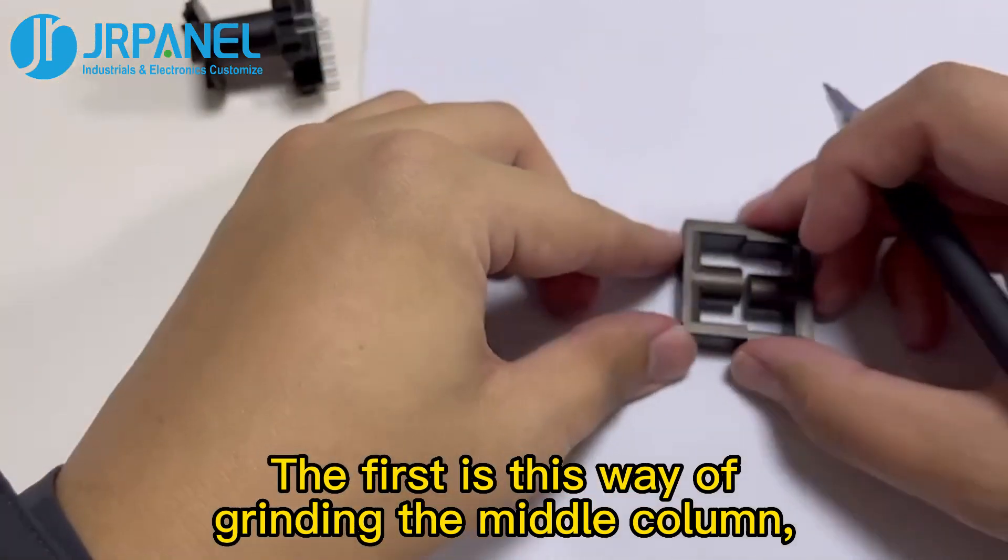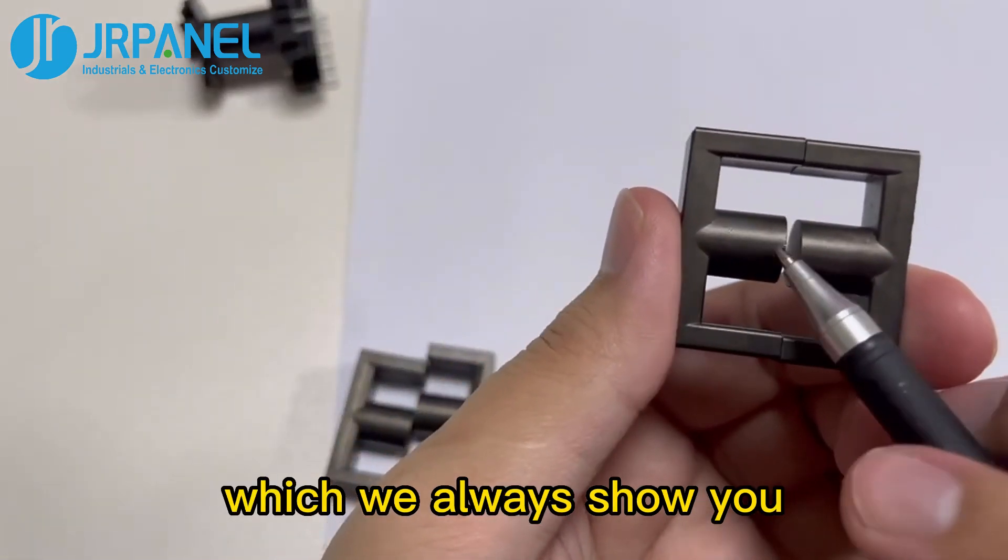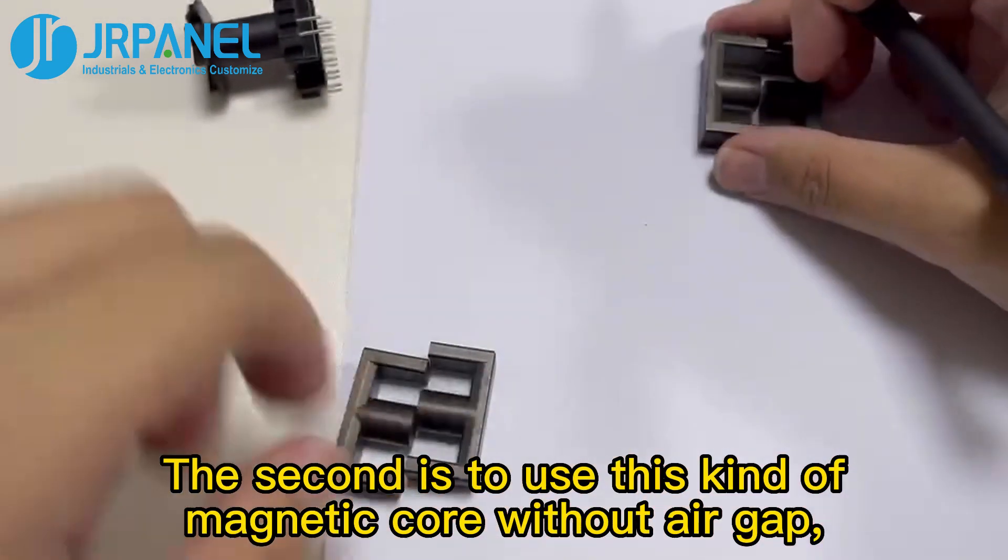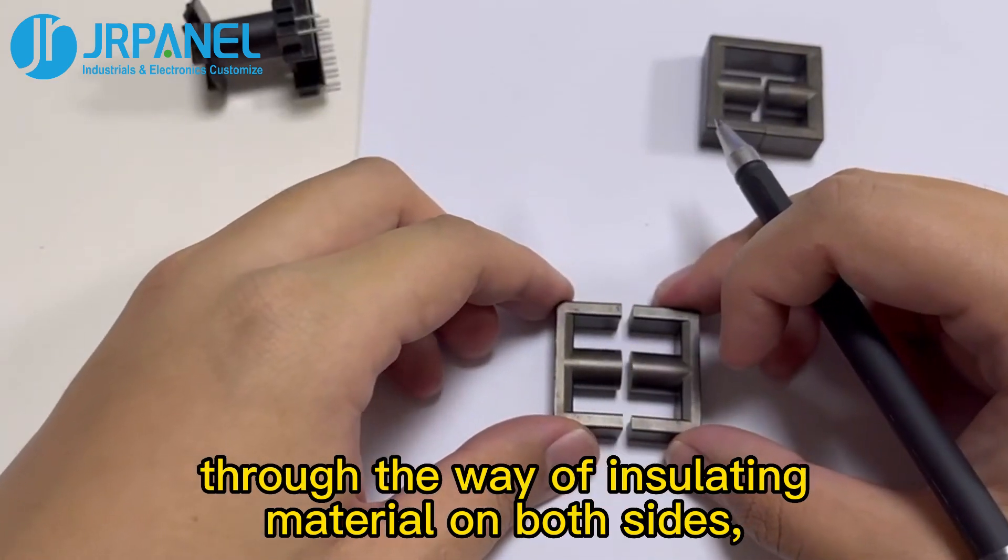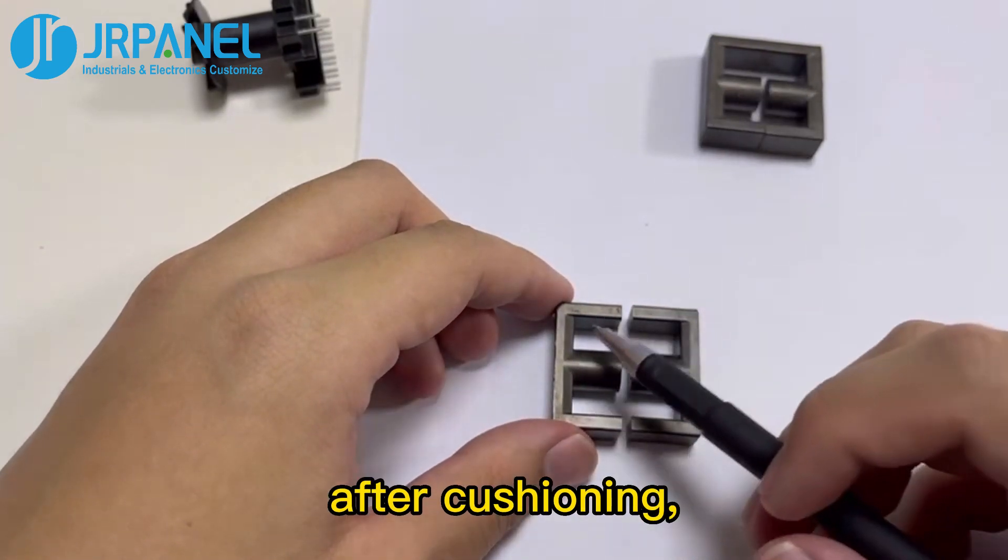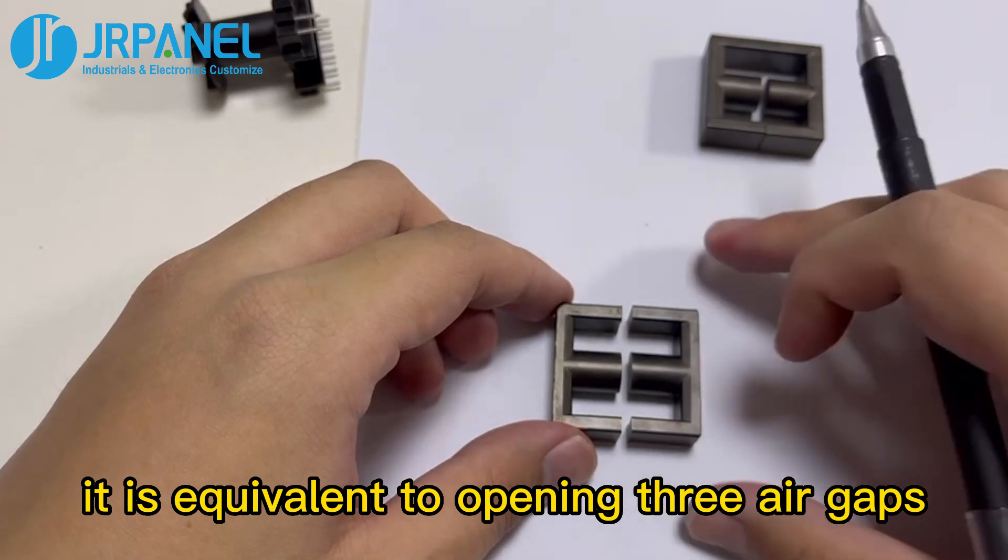The first is this way of grinding the middle column, which we always show you. The second is to use this kind of magnetic core without air gap, through the way of insulating material on both sides. After cushioning, it is equivalent to opening three air gaps.